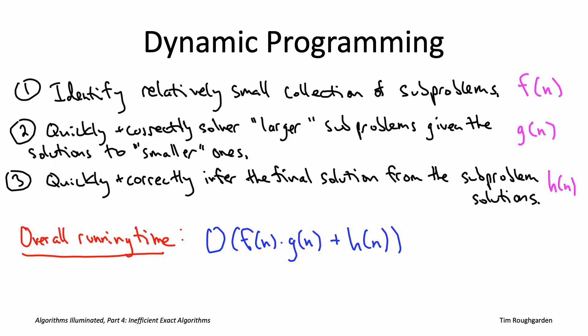Whereas the number of subproblems f(n) has been very different in the different dynamic programming algorithms that we've considered. If we're going to apply dynamic programming to the TSP, we need to expect one of these functions to be exponential, and thinking about it a little bit, it's really f(n) we expect to be exponential. We're going to be looking to see an exponential number of subproblems in our dynamic programming algorithm.